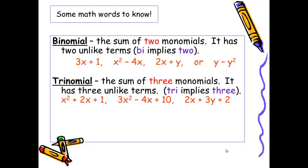A trinomial is the sum of three monomials. It has three unlike terms. Similarly, as tricycles have three wheels, trinomials have three terms. And here are several more examples.